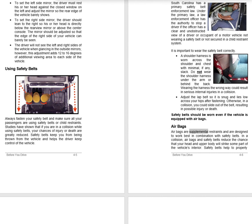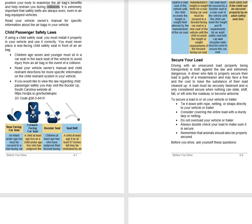Airbags: Airbags are supplemental restraints and are designed to work best in combination with safety belts. In a collision, airbags and safety belts reduce the chance that your head and upper body will strike some part of the vehicle's interior. Safety belts help to properly position your body to maximize the airbag's benefits and help restrain you during collisions. It is extremely important that safety belts are always worn, even in airbag-equipped vehicles. Read your vehicle owner's manual for specific information about the airbags in your vehicle. Child Passenger Safety Laws: If using a child safety seat, you must install it properly in your vehicle and use it correctly. You must never place a rear-facing child safety seat in front of an airbag. Children age 7 and younger must sit in a car seat in the back seat of the vehicle to avoid injury from an airbag in the event of a collision. Read your vehicle owner's manual and child restraint directions for more specific information.